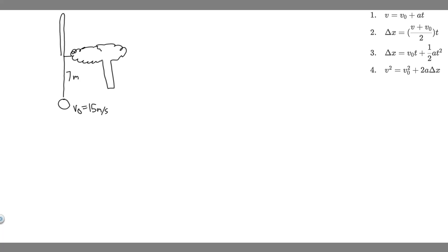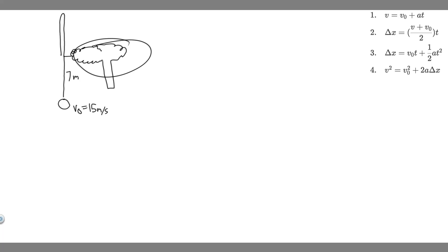Always what you want to do is draw what's going on. So you have this ball — initial velocity is going to be 15 meters per second. It's going to be thrown up at 15 meters per second, it's going to go up 7 meters, and at that point it's going to pass by this tree branch.